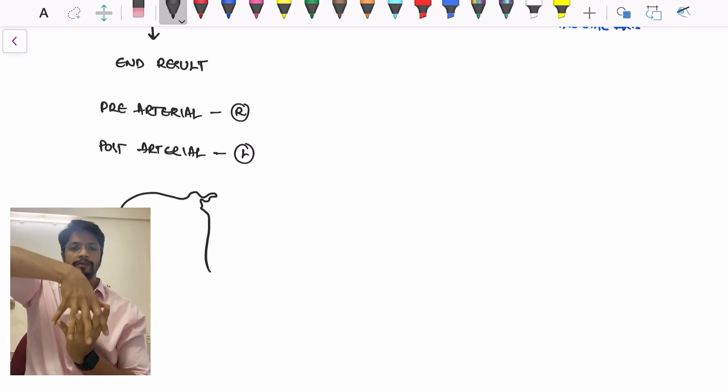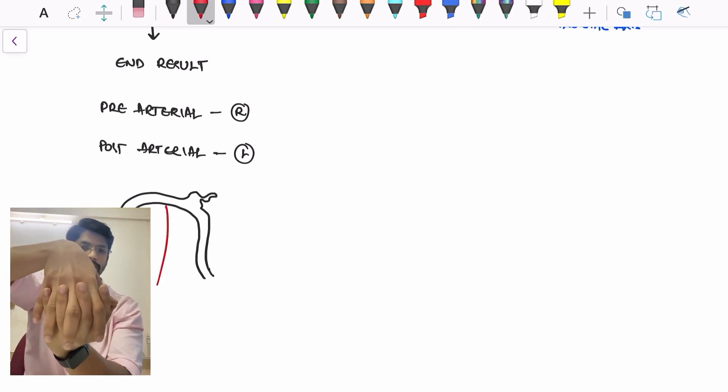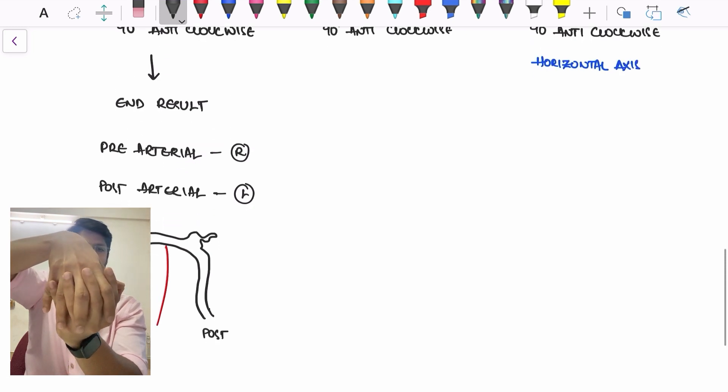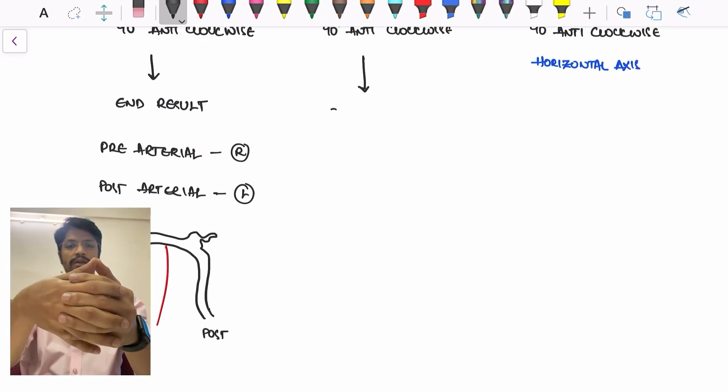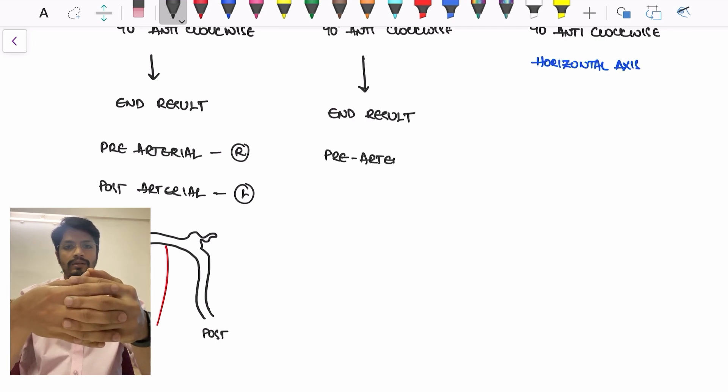Now the physiological herniation occurs, and this is at the presentation. By the end of phase 1, the 90 degrees anticlockwise rotation, the pre-arterial segment will be on the right side and the post-arterial segment will be on the left side. This is the end result of phase 1.